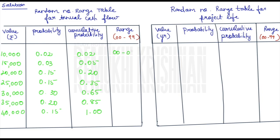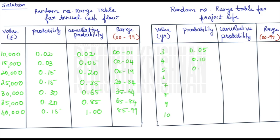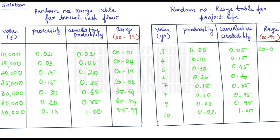The range table starts with 00 and is exclusive — it never includes the upper boundary digit. For example, for range 00 to 01, you should not take 02; whichever number appears in the cumulative probability column is not to be included in that range. The same process is done for project life: copy the information from the question, find the cumulative probability, and use it to find the range. For example, if the cumulative probability is 0.05, the range is 00 to 04.